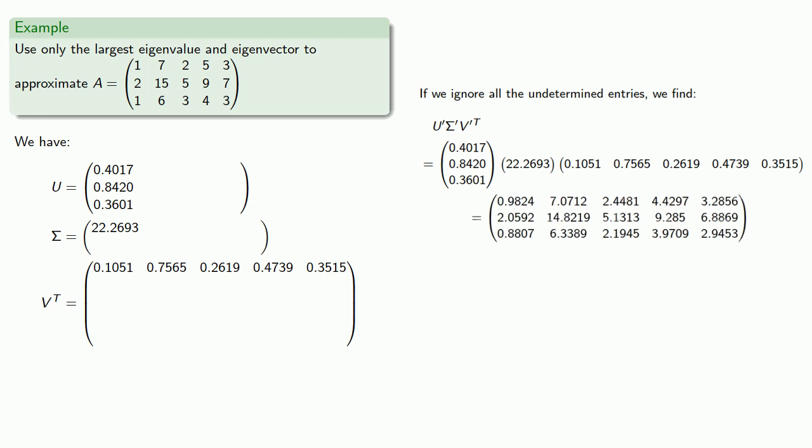Now the value of what we did might not be obvious, but suppose we knew that our matrix A had integer values. If we rounded the entries of U' Σ' V'^T to the nearest integer, we'd get the following matrix.